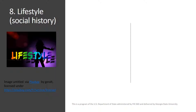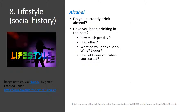Finally, you will need to get information about your patient's lifestyle. In this section, there are many questions you can ask. You might ask about alcohol use with a simple question: do you currently drink alcohol or have you been drinking in the past? If the answer is yes, start follow-up questions: how much a day, how often, what do you drink — beer, wine, or liquor — and how old were you when you started drinking?